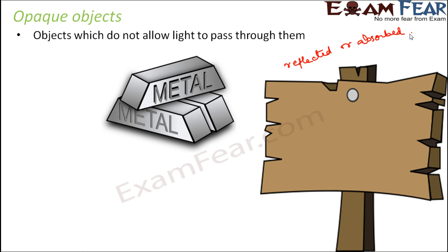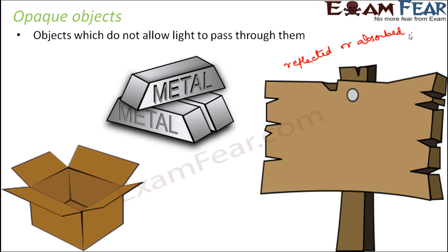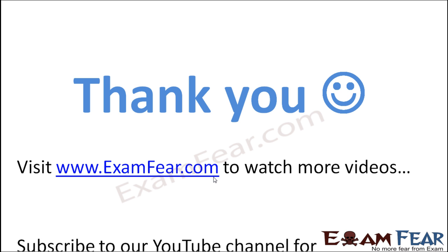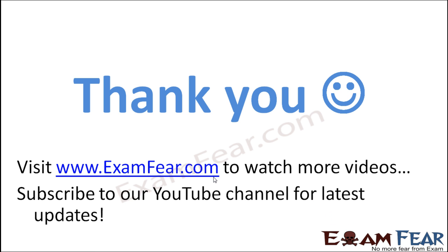Most metals are opaque in nature — they do not allow light to pass through them. A cardboard box is also an opaque object. So with these definitions of transparent, translucent, and opaque objects, I would like you to look at objects around you and try to classify them as transparent, translucent, or opaque. Thank you. Please visit examfear.com to watch more educational videos. Please do not forget to like and subscribe to our YouTube channel for latest updates. Thank you once again.